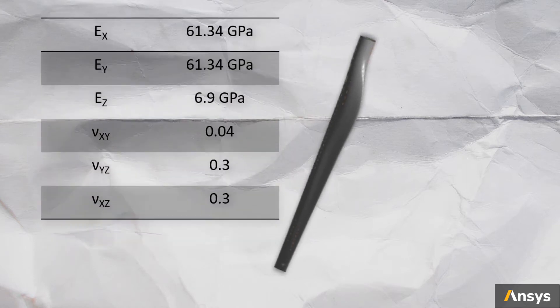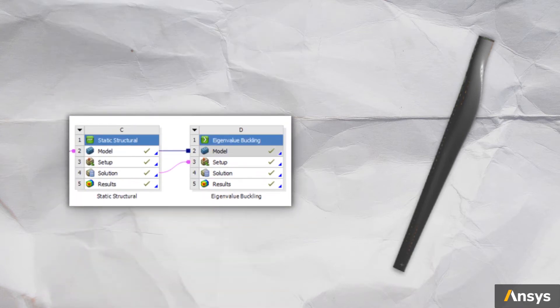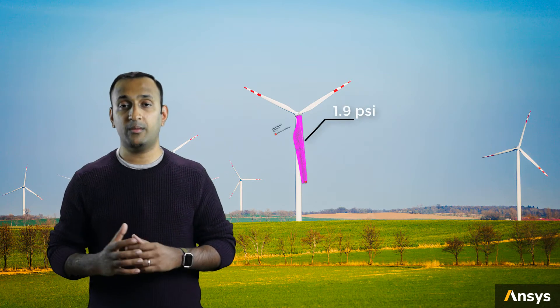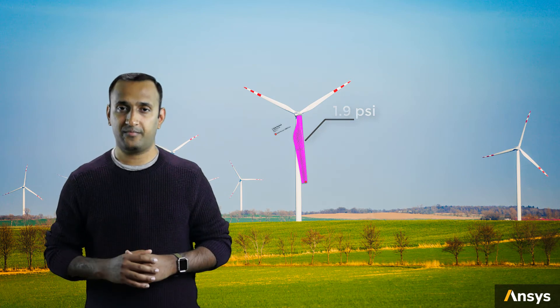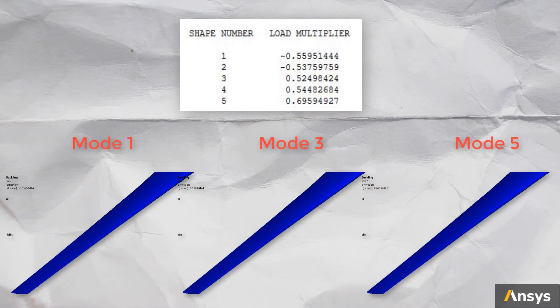Here are the material properties for this material. First, we will perform a static analysis with a nominal pressure acting as the load. This solution is then used to perform an eigenvalue analysis to calculate the buckling loads. We apply a nominal pressure of 1.9 psi distributed on one side of the blade to mimic the wind load. The other end of the blade is fixed in all directions.